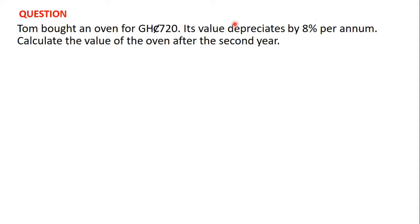We are told that the value of the oven, which is 720 Ghana cedis, depreciates by 8 percent per annum. This means the value of the oven reduces by 8 percent every year — per annum means yearly. So at the end of every year, the value of the oven will reduce by 8 percent.